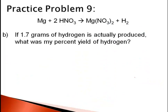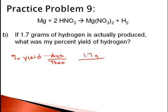Part B tells me I make only 1.7 grams of hydrogen. Percent yield is actual over theoretical — I actually make 1.7 grams and theoretically should have made 3.3 grams, so my percent yield is 52%.